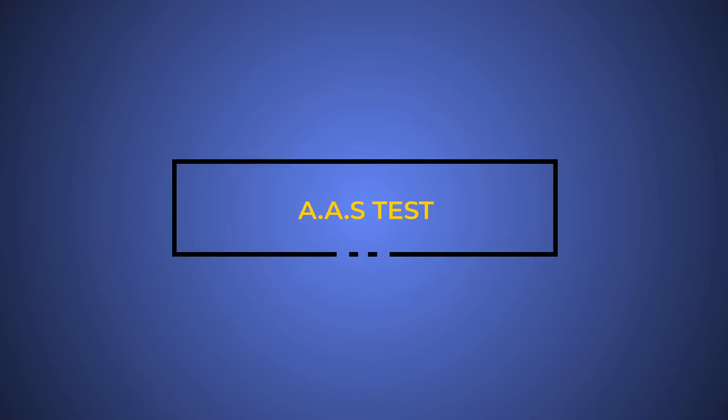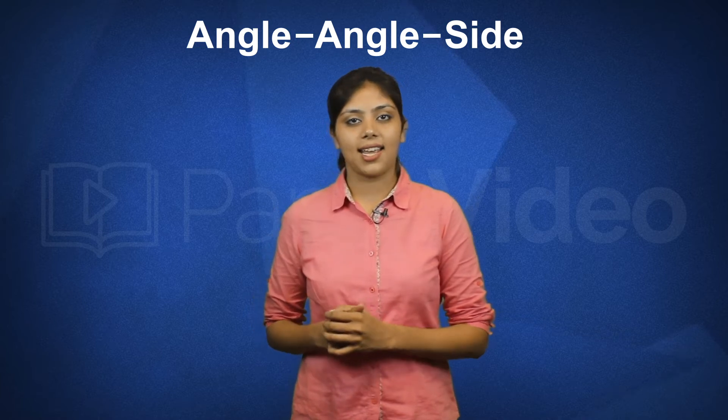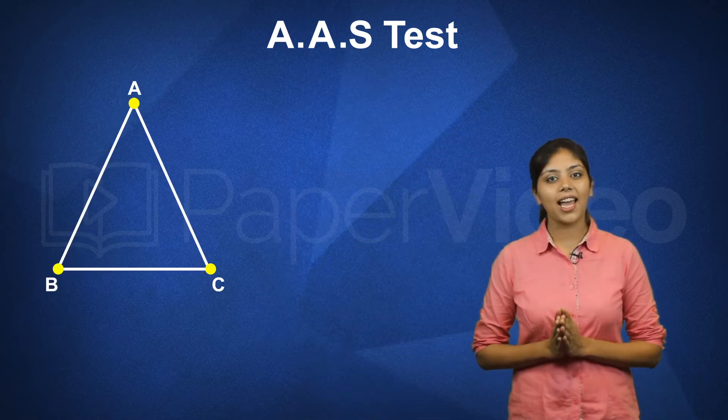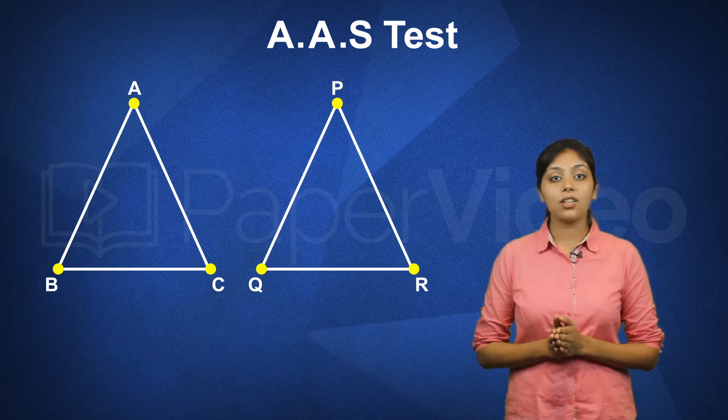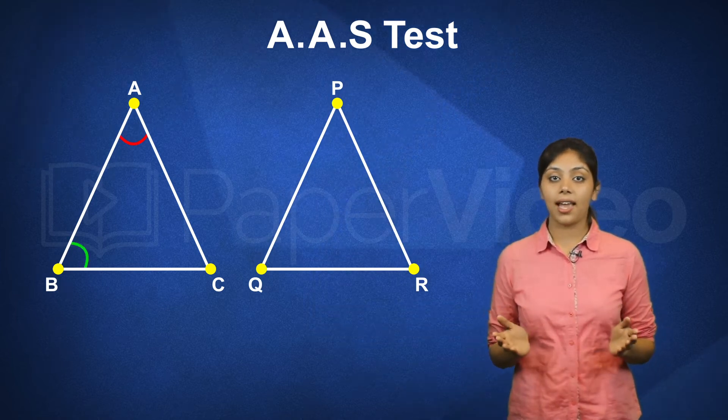In this video we will learn about the Angle-Angle-Side test, or in short the AAS test of congruency. To understand this, let us consider two triangles ABC and PQR. According to the Angle-Angle-Side test, if any two angles and any side of triangle ABC are equal to the corresponding angles and the corresponding side of triangle PQR,